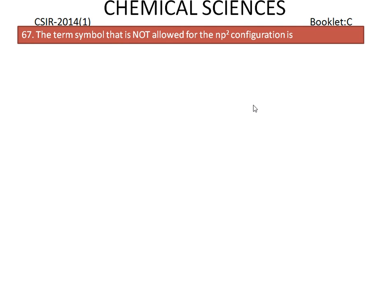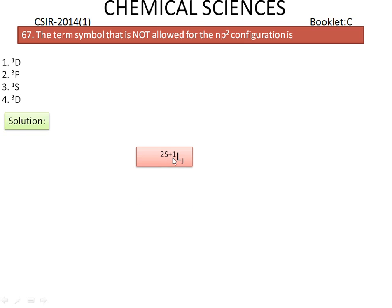The term symbol that is not allowed for the NP2 configuration is — the options are shown here. A term symbol is determined by 2S+1 L J, where 2S+1 is the spin multiplicity. For the P2 configuration, its corresponding ml values are +1, 0, and -1.